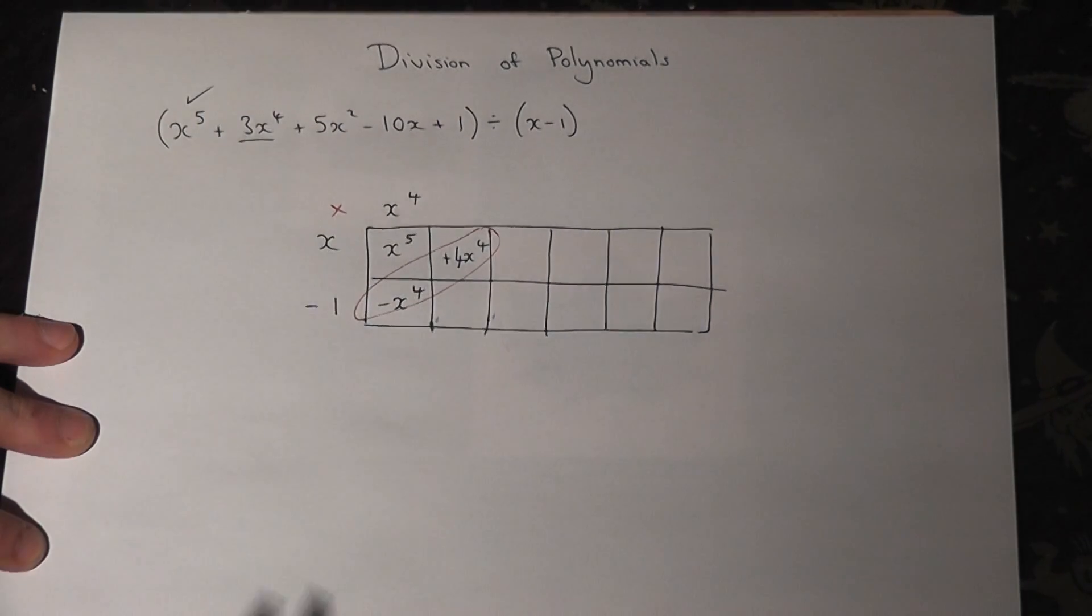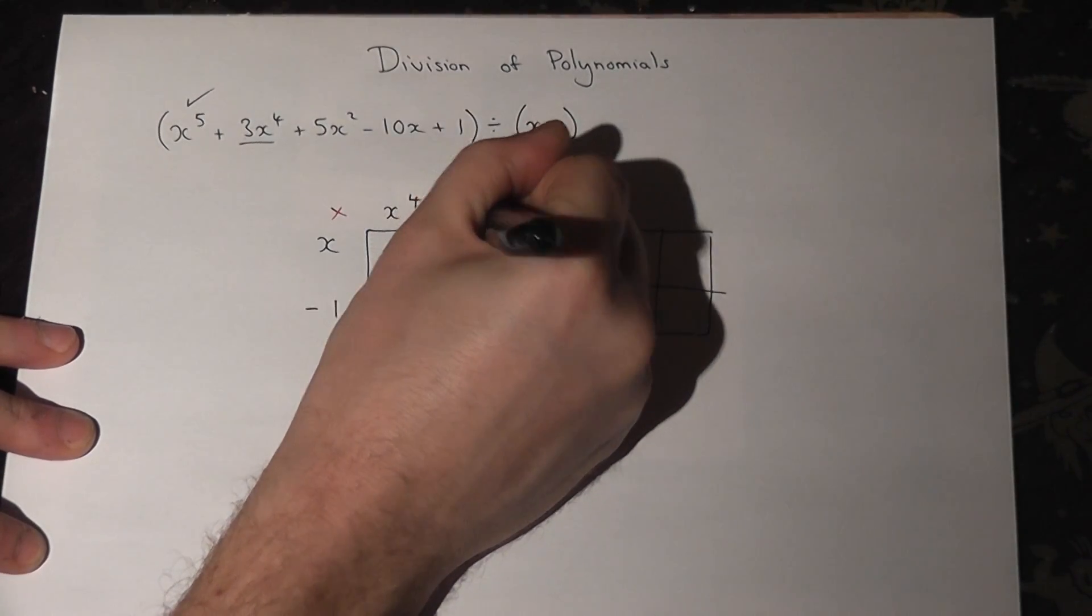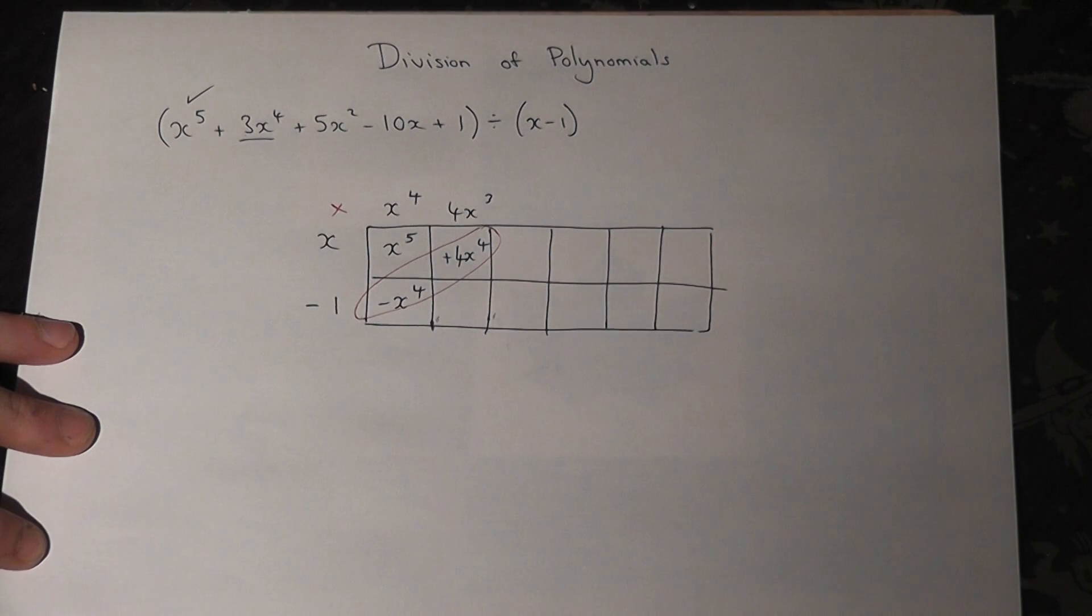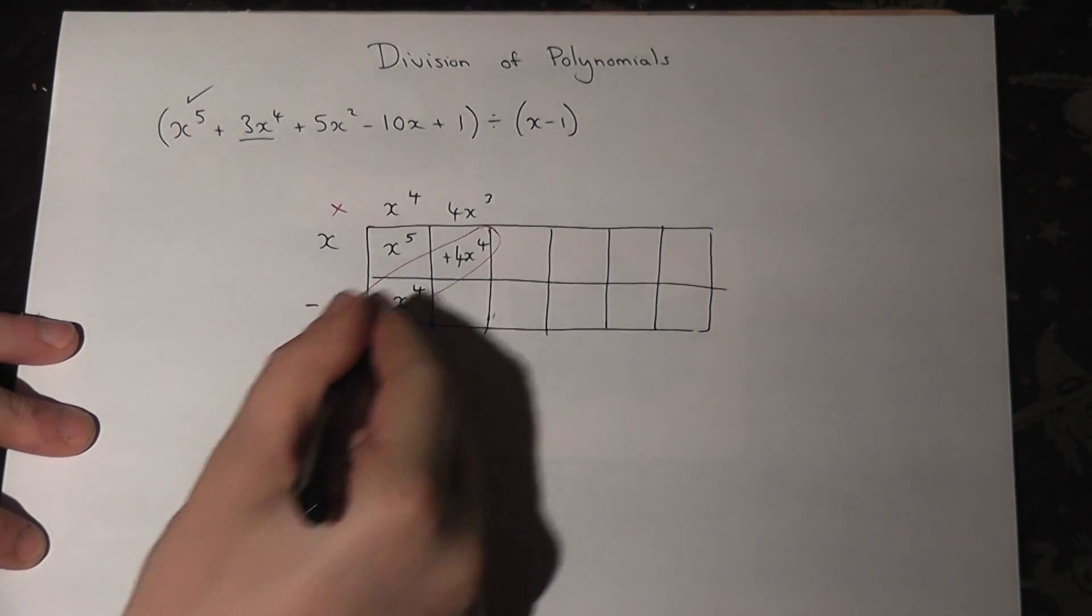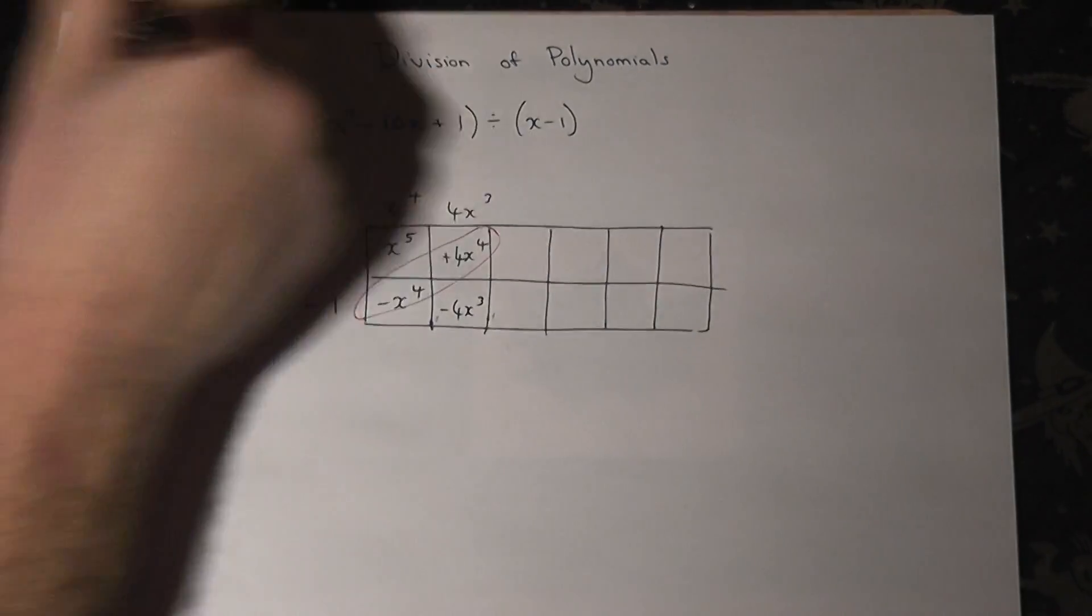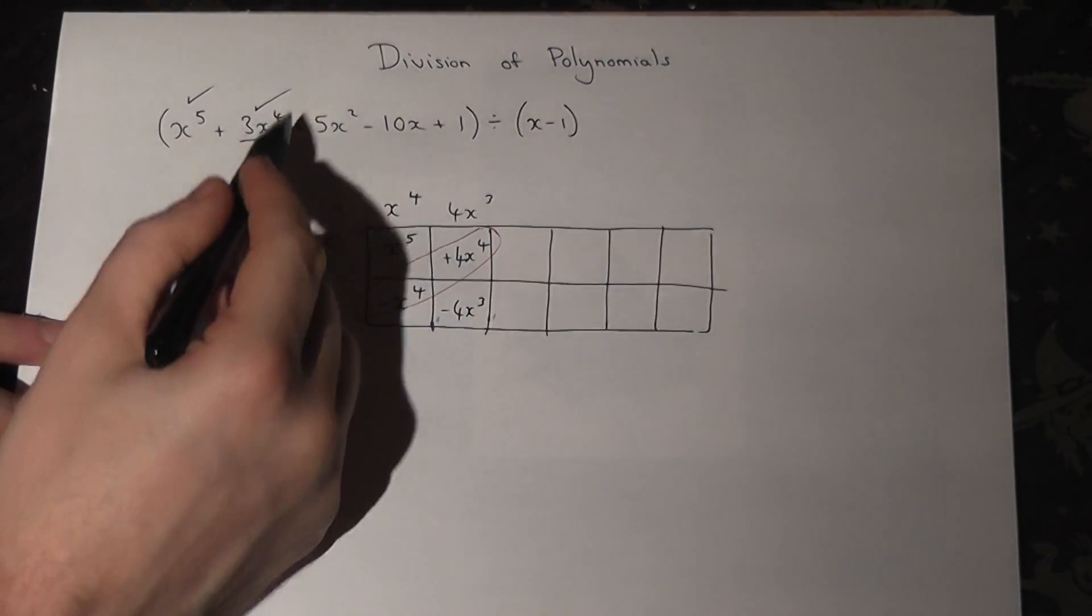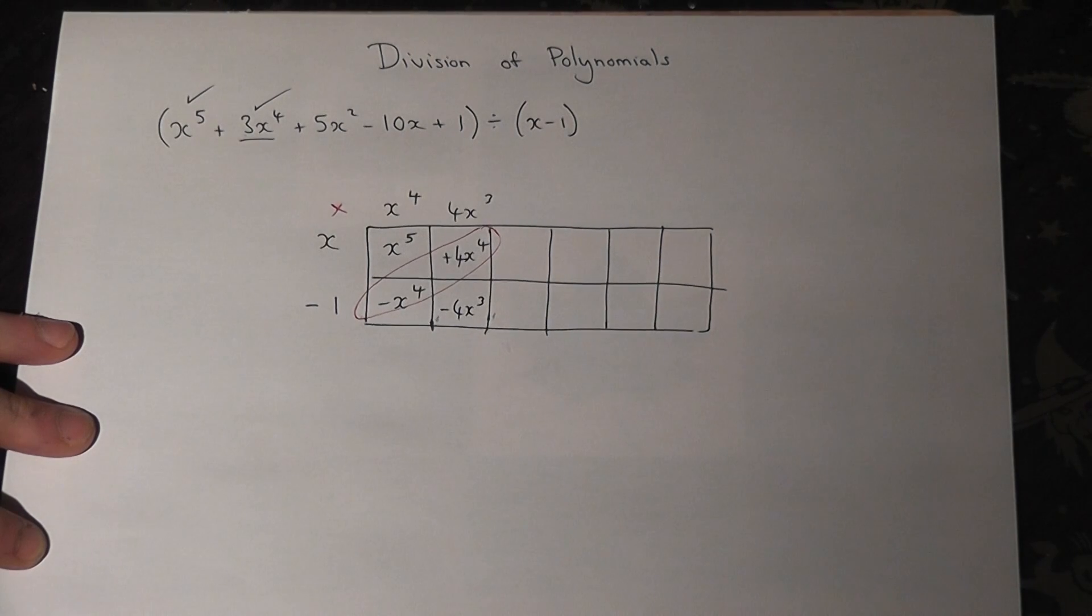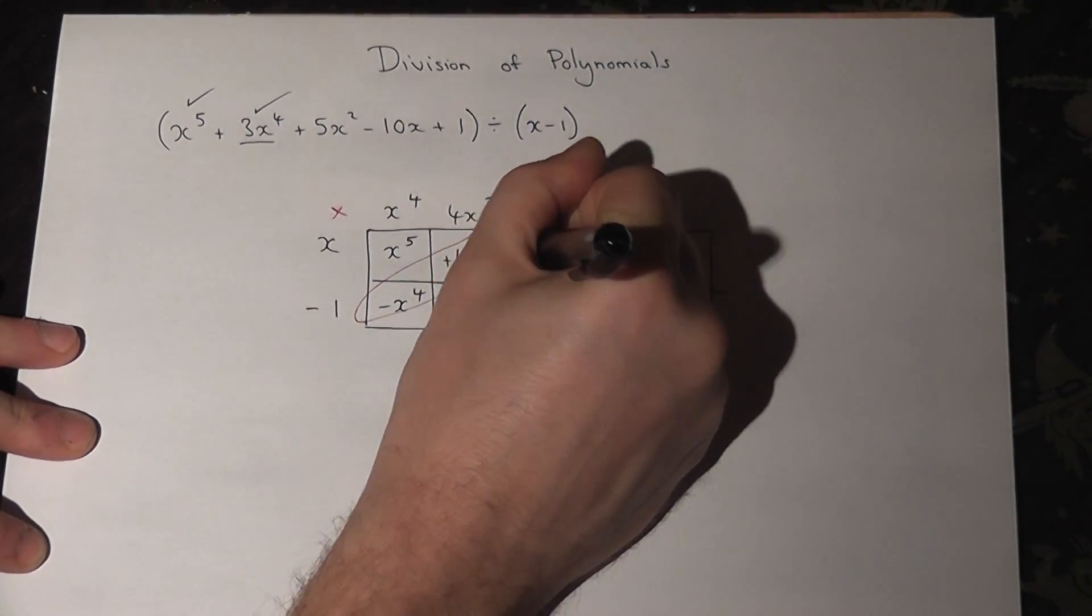There's an x here, so that must be times by 4x cubed. But minus 1 times 4x cubed is minus 4x cubed. I've achieved it already. I want there to be no x cubes, so I must add on an extra 4x cubed.